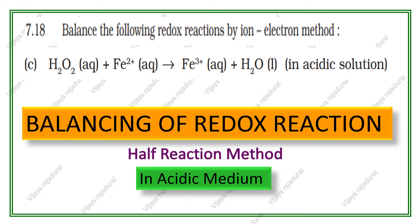Hello friends, welcome to Rajavala Education Channel. Here we are going to see one of the questions taken from the 11th NCERT Chemistry book. The question is: balance the following redox reaction by the ion-electron method. The equation is H2O2 plus Fe2+ gives Fe3+ plus H2O. The medium is acidic.